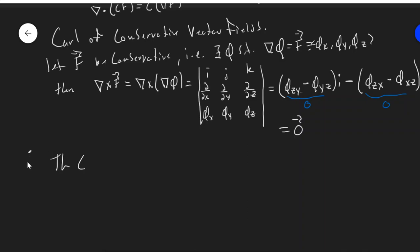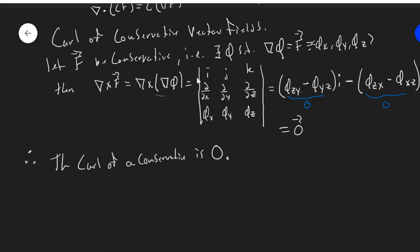So the curl of a conservative vector field is zero. Here we have del cross del of phi, and we get the zero vector, so long as it's conservative and we can write F as del phi.